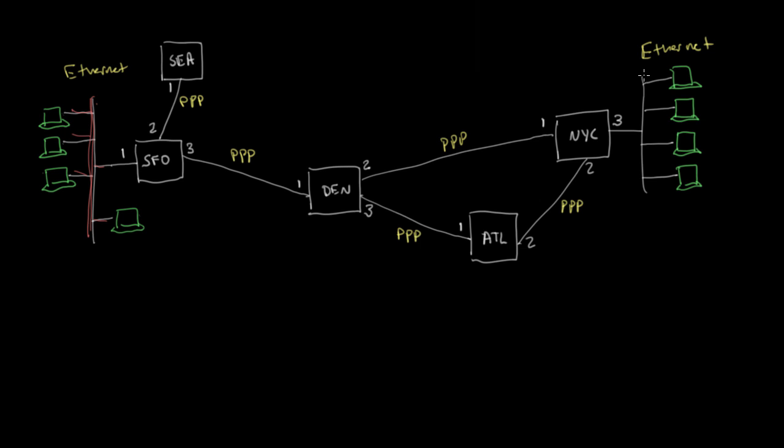Then we have the other Ethernet network over here on the right. And what we want to do is be able to send a frame from this computer, let's call it host A, to this other computer over here on the right, which we'll call host B.